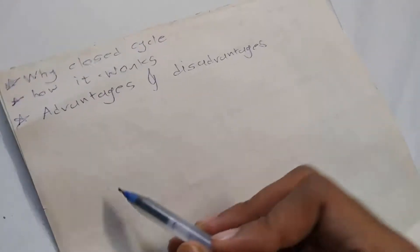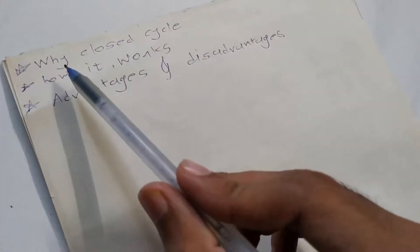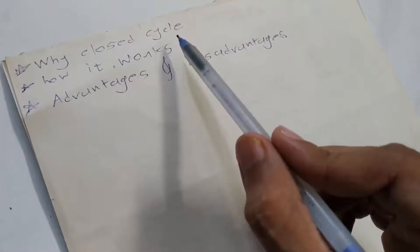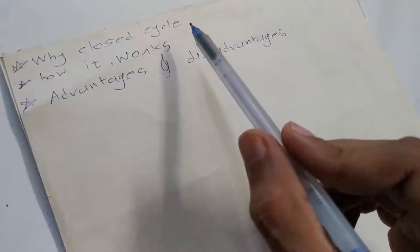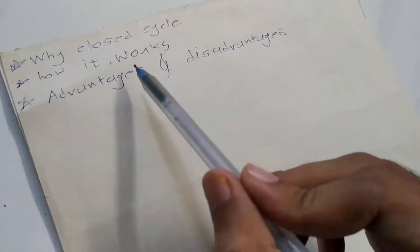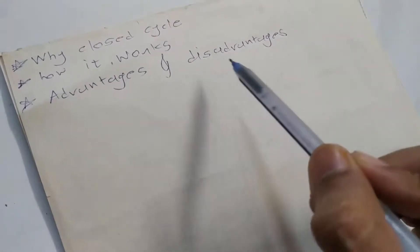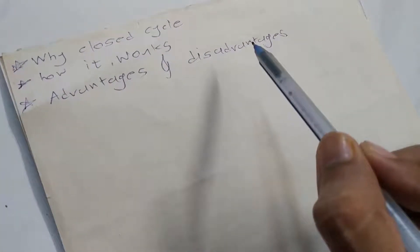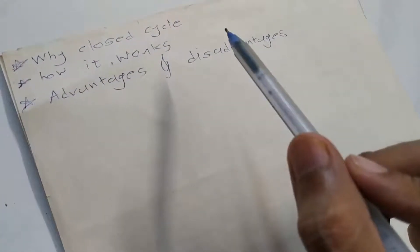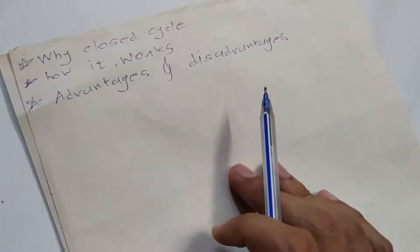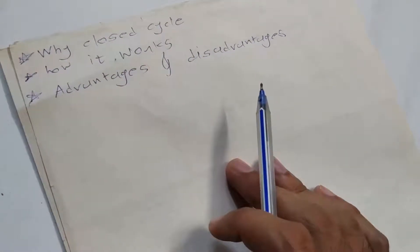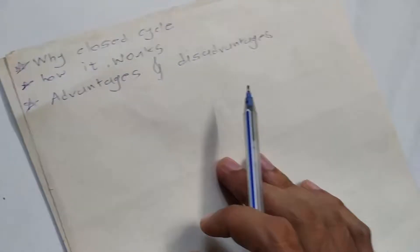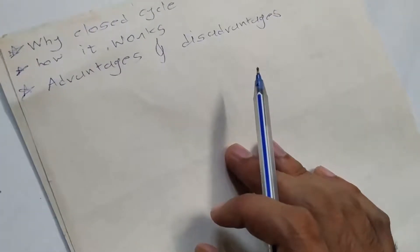Without wasting time, let's get started. In this video, first I will explain why we need to use closed cycle instead of open cycle gas turbine power plant, how it works, and what are the advantages and disadvantages of closed cycle gas turbine. To explain why we need to use closed cycle instead of open cycle, first I have to draw a figure of the open cycle gas turbine.